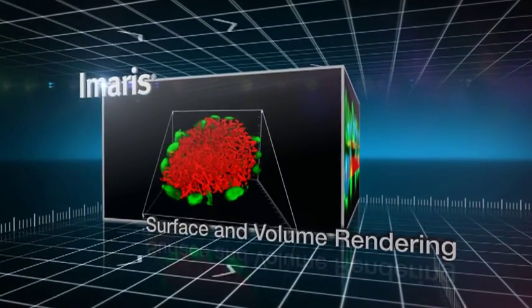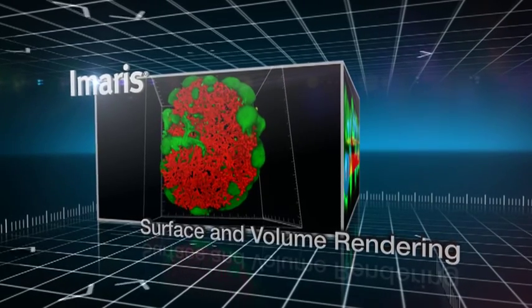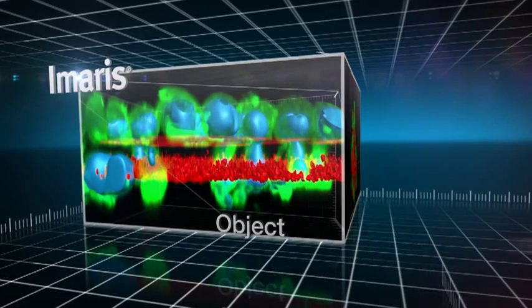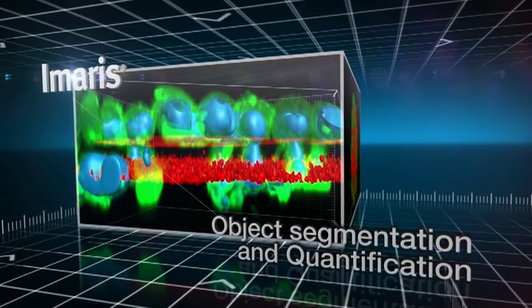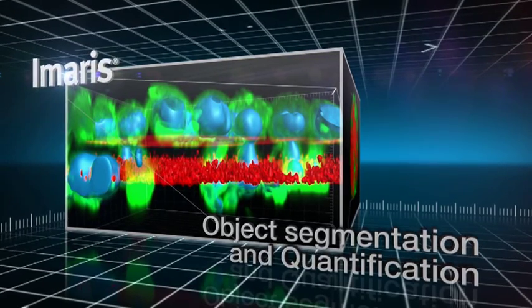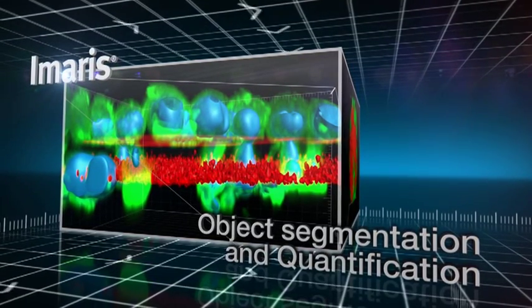Imaris is the core software to bolster your 3D and 4D image visualization. With a vast array of segmentation options, Imaris provides you with the most effective tools to segment even the toughest datasets and help you identify and visualize individual objects.